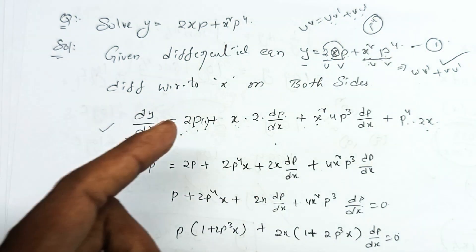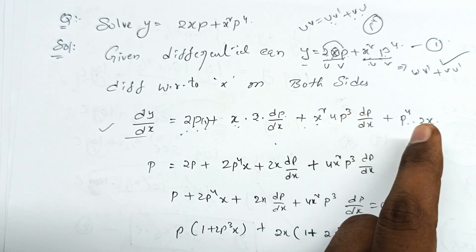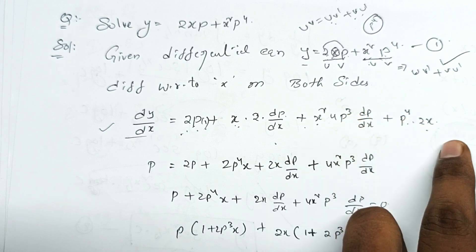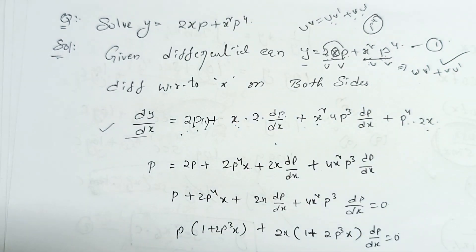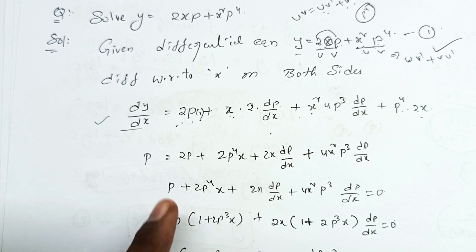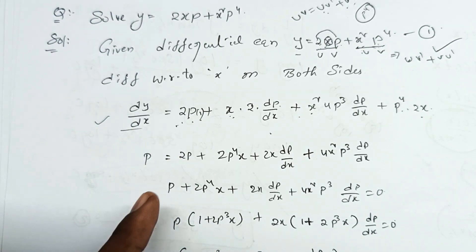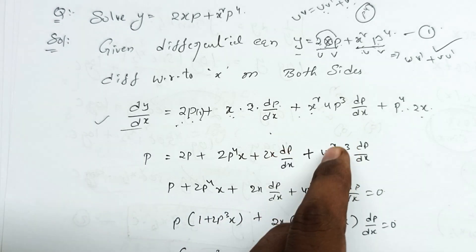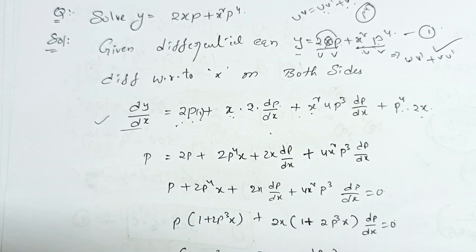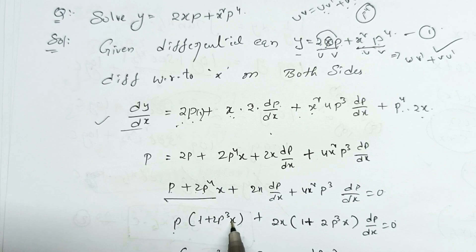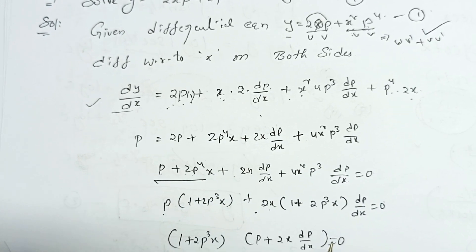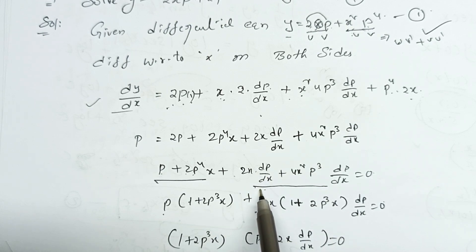This gives 2p plus p squared times x — the same value combined. If you change the value: 2p minus p, plus the same value. Zero is equal to zero. p is common: 1 plus 2p cubed x plus 2x into dp by dx into 1.